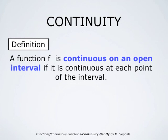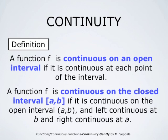Next, we define continuity on an interval. We say that a function f is continuous on an open interval if it is continuous at each point of the interval. A function f is continuous on the closed interval from a to b if it is continuous on the open interval from a to b, and left continuous at b, and right continuous at a.